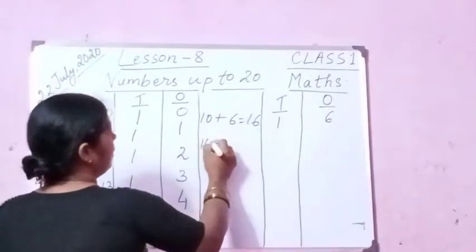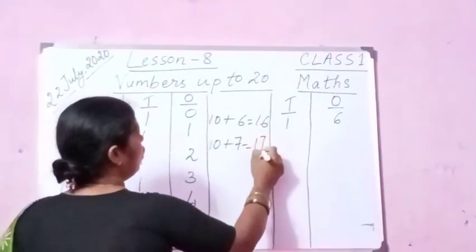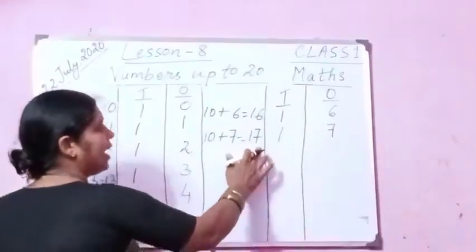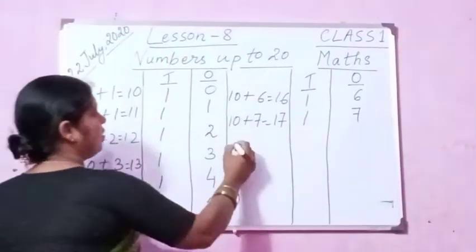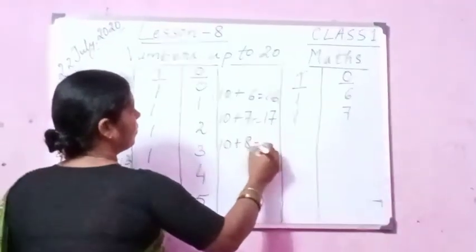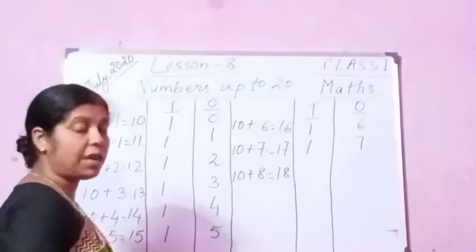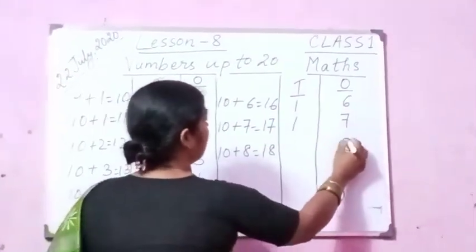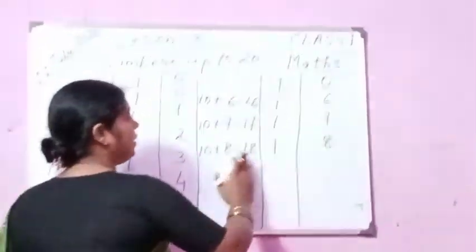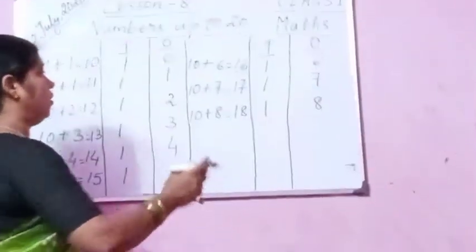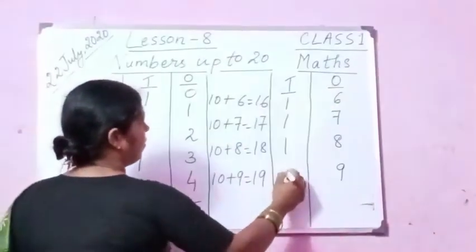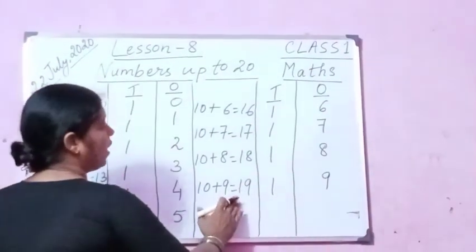10 plus 7 is 17. In the ones place 7, in the tens place 1. That means 1 ten and 7 ones. 10 plus 8 is 18. 10 and 8 more is 18, please keep in mind. So in the ones place we have 8 and in the tens place we have 1 — that means 1 ten and 8 ones. 10 plus 9 equals 19. In the ones place we have 9 and in the tens place we have 1. So 1 ten and 9 ones.